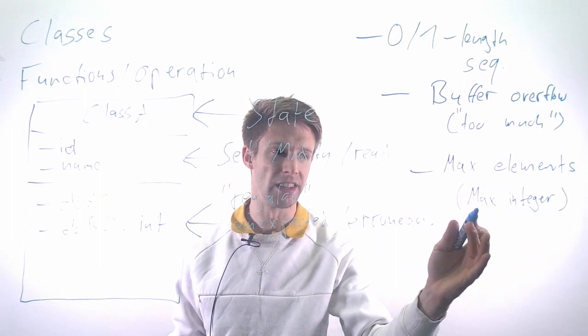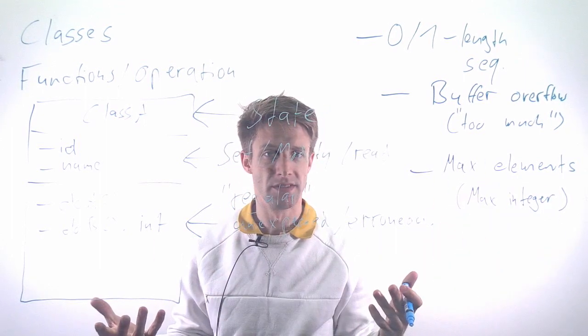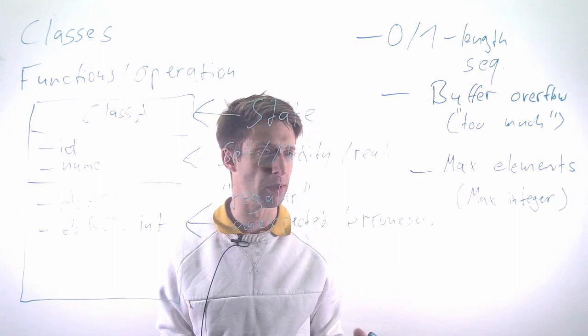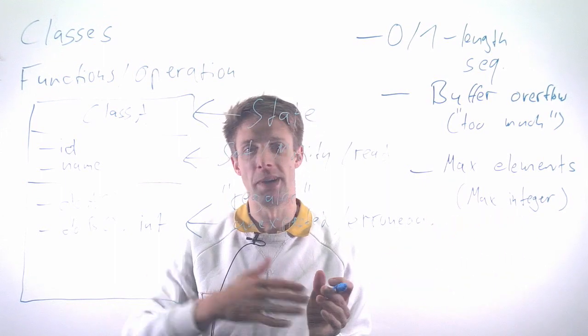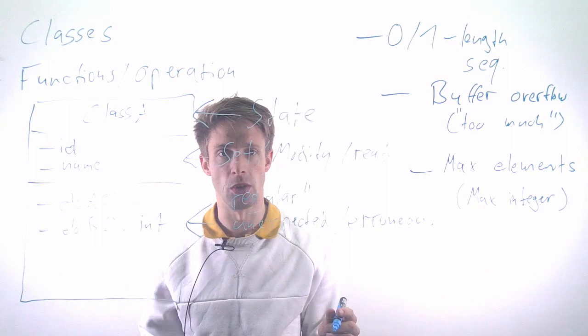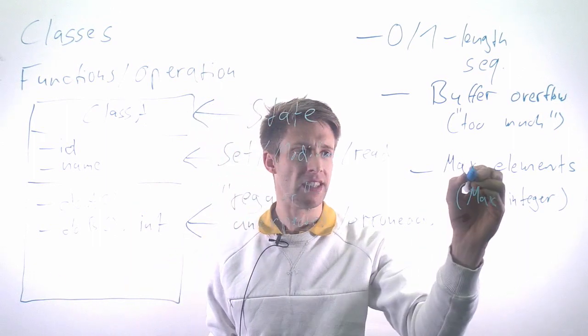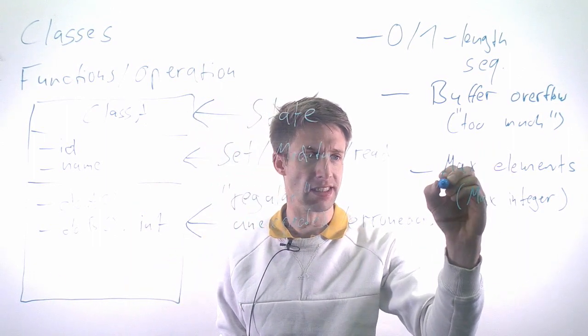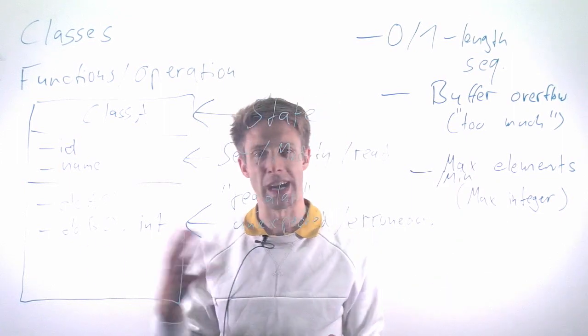This happens very often—people forget about that. By using very large or very small elements, this typically gets exposed. Max, minimum elements in a certain data type is something to test.